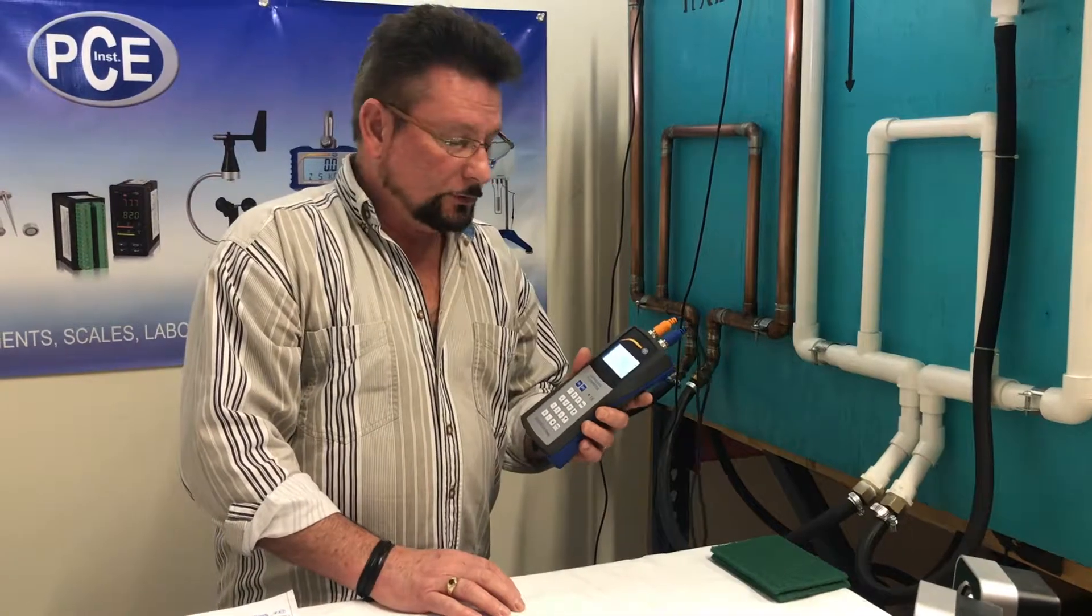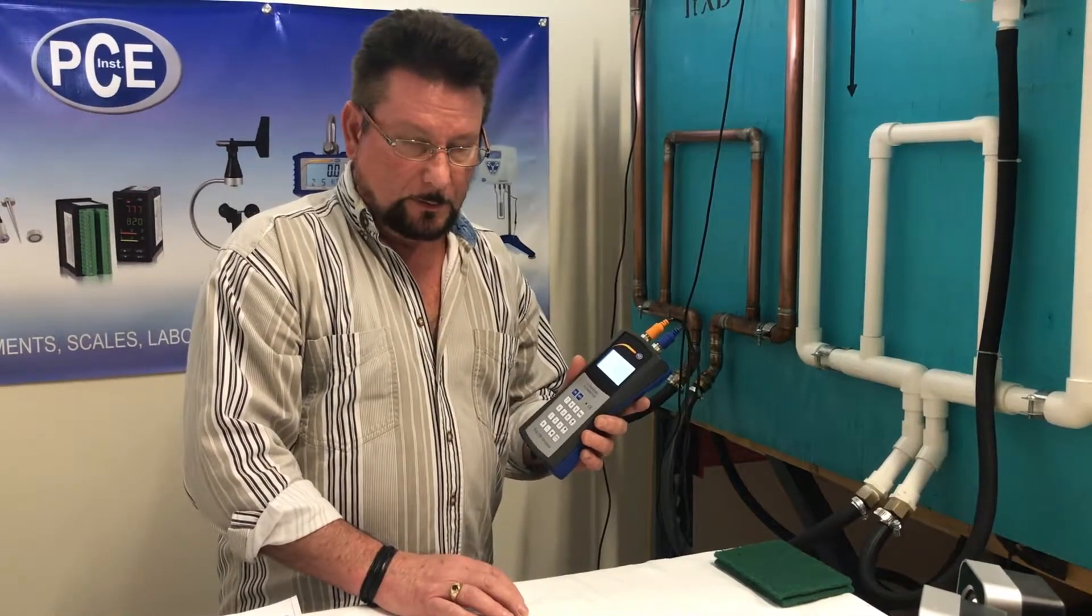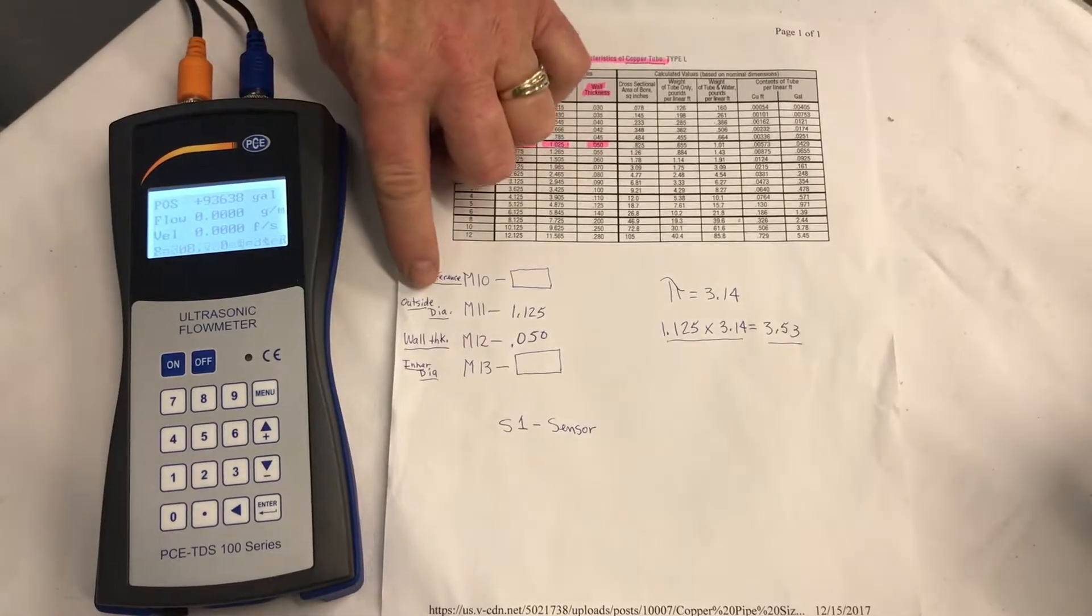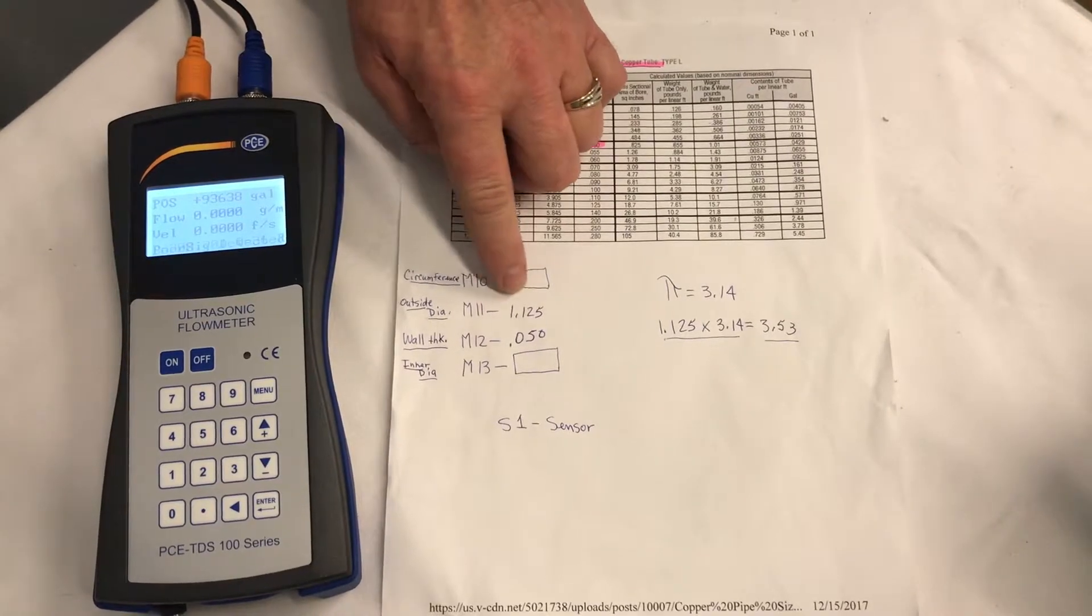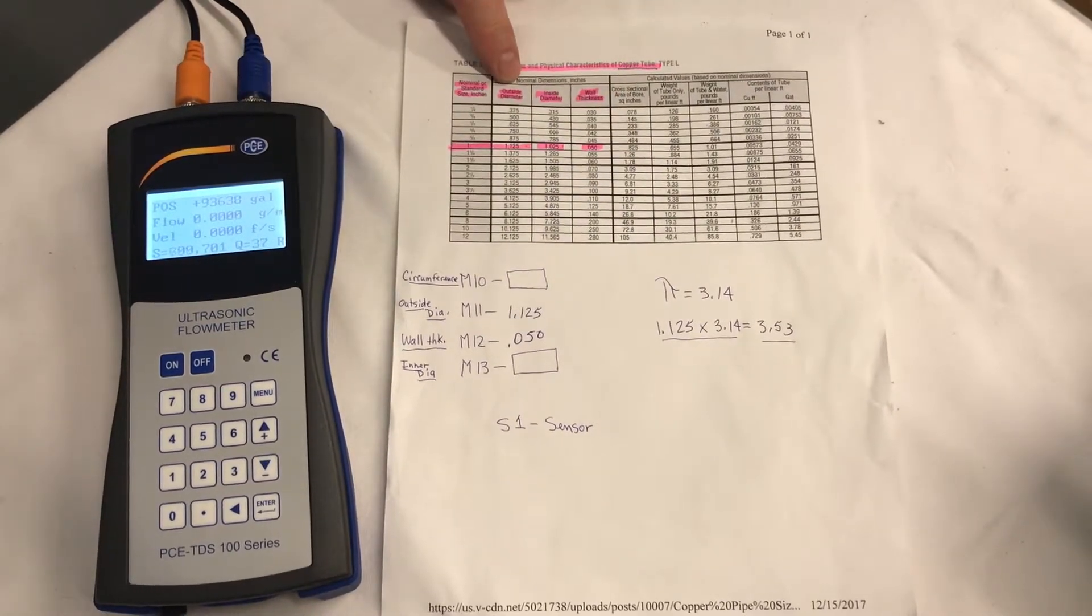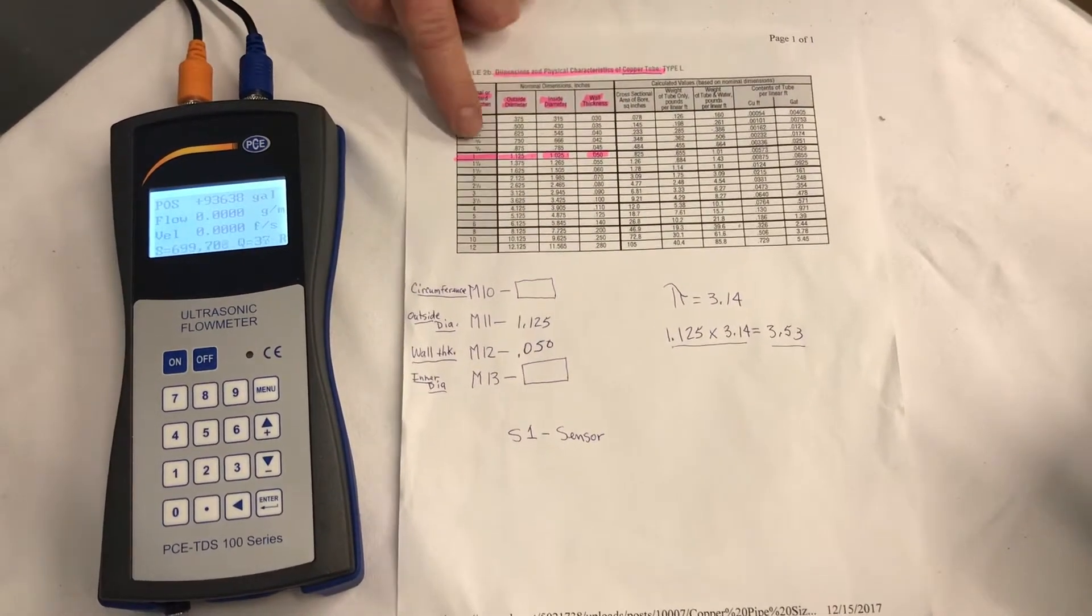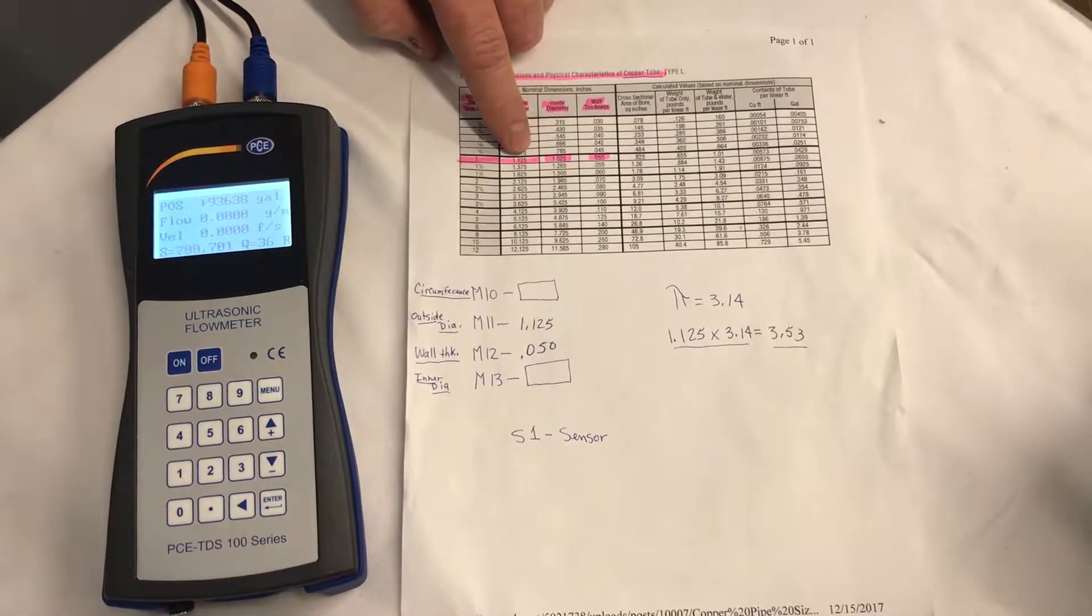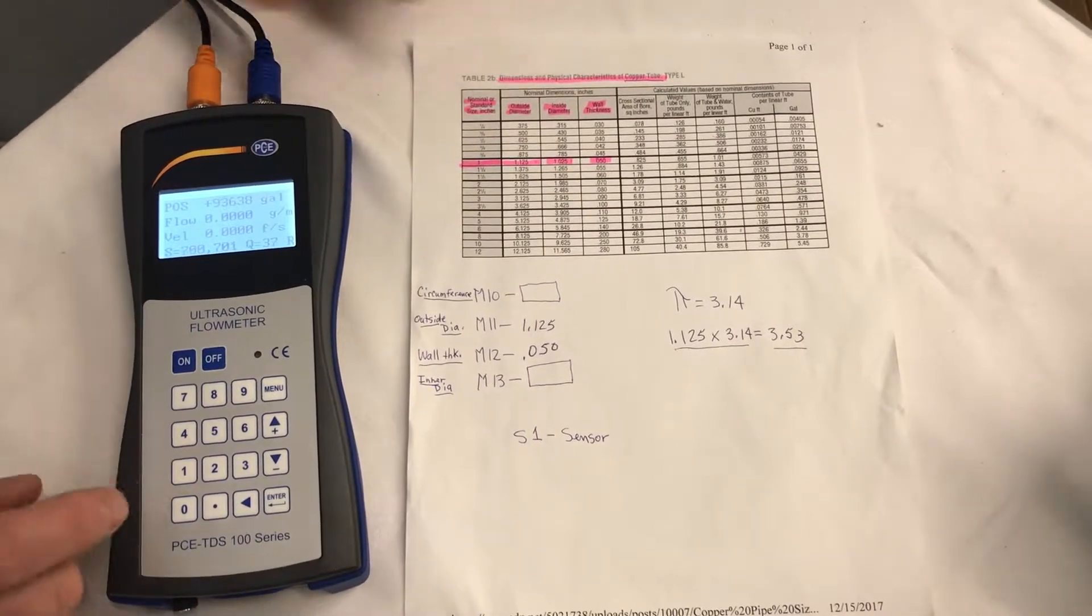Now we're ready to put the parameters into the meter for the pipe. We're going to do the outside diameter, which is ILM-11, and it's on our chart. Outside diameter for one inch pipe is 1.125.